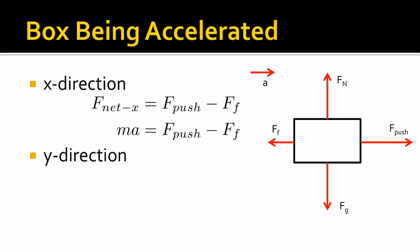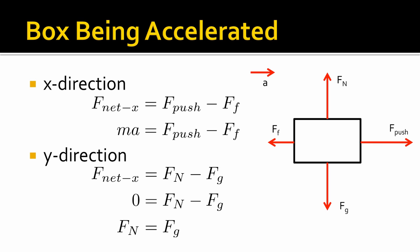Now let's look in the y direction. There is no acceleration in the y direction, so we can say up is positive and down is negative. That means F normal is going to be a positive force and F gravity is going to be a negative force. We add those forces together, and since acceleration is zero, ma equals zero. Rearranging this equation, we get F normal equals F gravity. A little tip: if there is no acceleration in a direction, all the forces on one side equal all the forces on the other side.